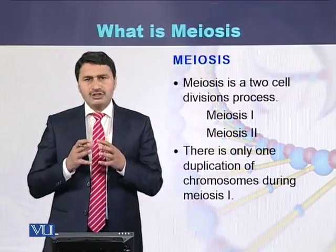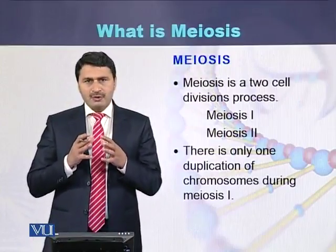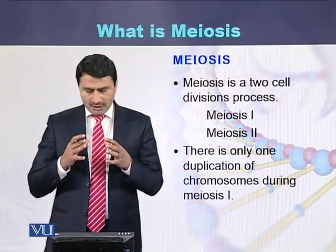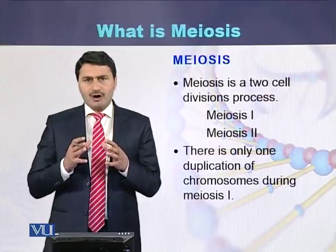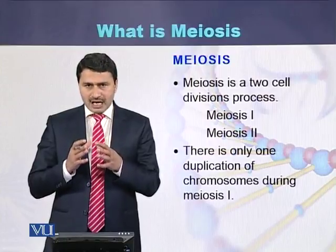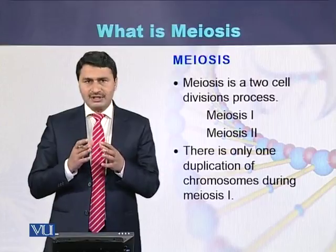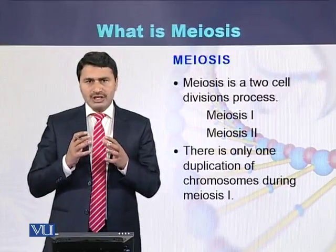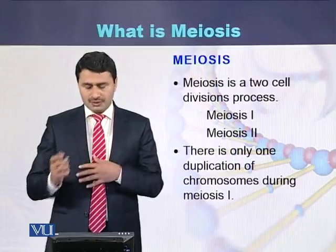Meiosis is a two-step process: meiosis 1 and meiosis 2. There is only one duplication of the chromosomes, which occurs at the start of meiosis 1 during interphase, while in meiosis 2 there is no duplication of the chromosomes.